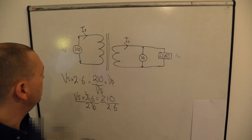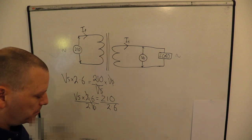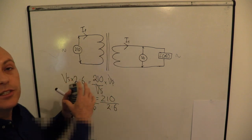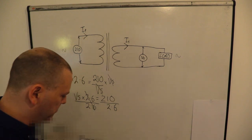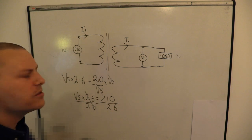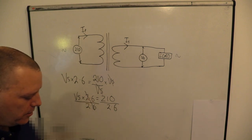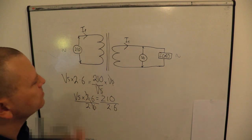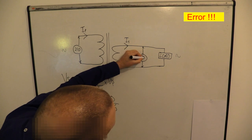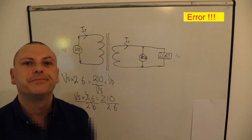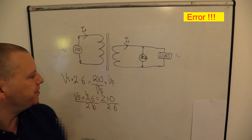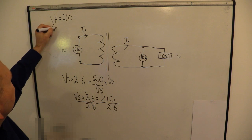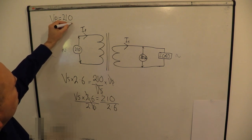There's more than one way of getting there - we could have used the VA value, the power, divided it by the primary voltage to get the primary current, and then used that equation in another way. But 210 divided by 2.6 gives us 80.77 volts. So we've got our secondary voltage. I'm going to list what we've got: secondary voltage is 80.7 volts, primary turns were 23, secondary turns were 9.